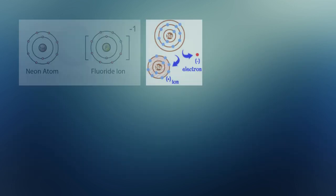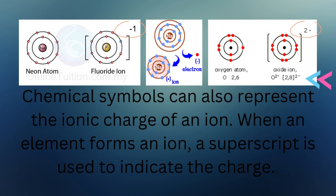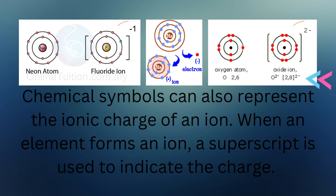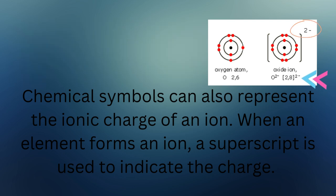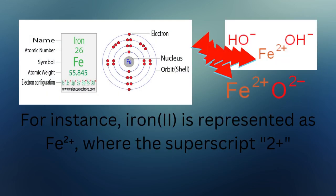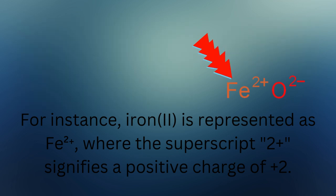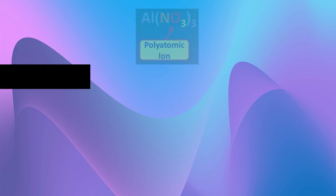Ionic charges. Chemical symbols can also represent the ionic charge of an ion. When an element forms an ion, a superscript is used to indicate the charge. For instance, iron(II) is represented as Fe²⁺, where the superscript 2+ signifies a positive charge of plus 2.